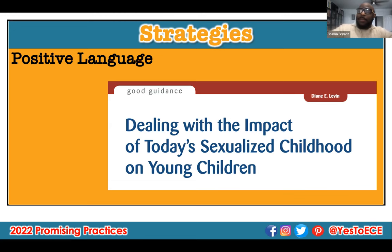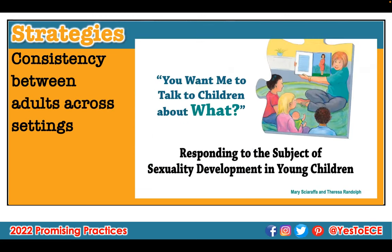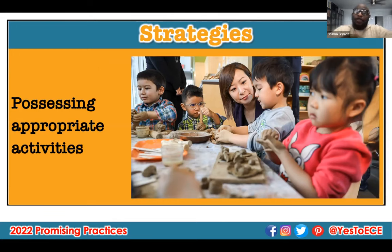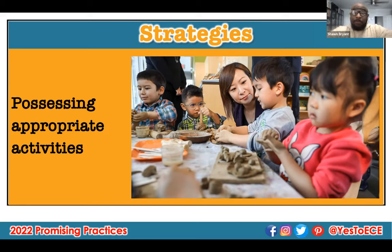Consistency between and across adults in settings is really important. Another strategy is appropriate activities. How many times have you considered that when children play with something like clay, they could actually be engaging in an appropriate early healthy sexual development activity? Children who take that clay and start making people — that's exactly what they're doing. We don't see it through that lens, but it's the beginning stages of healthy sexual development for young children.